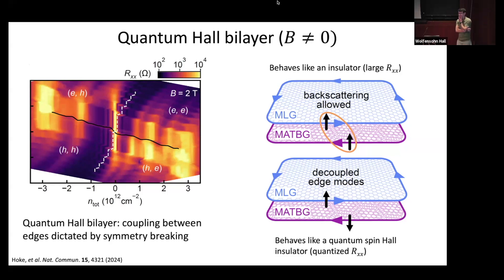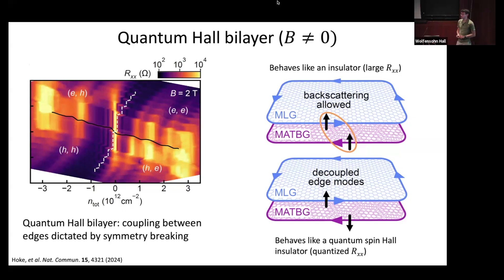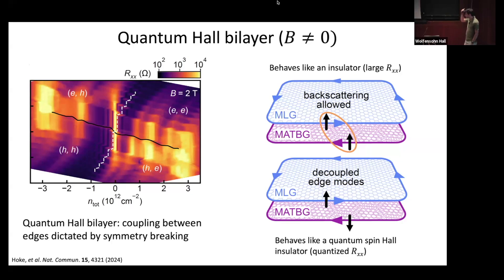If both counter-propagating edge modes have the same spin, one can backscatter into the other, giving large resistance. If they have opposite spins, in the absence of magnetic disorder, the two modes just flow past one another — like an artificial quantum spin Hall insulator. By looking at the resistance details in this trilayer, we can learn about the relative spin alignments of states in each layer. We know the spin polarization from prior measurements of monolayer graphene, so we can use that as a probe for the magic-angle graphene subsystem.